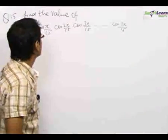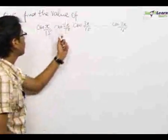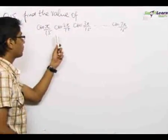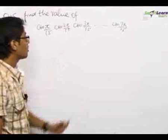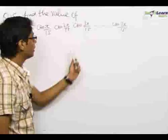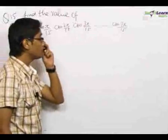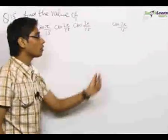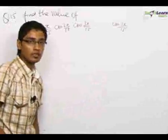In our 15th problem, we have to find the value of cos(π/15) · cos(2π/15) · cos(3π/15), up till cos(7π/15).